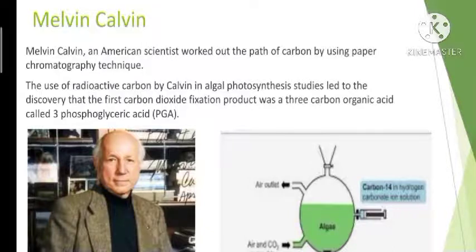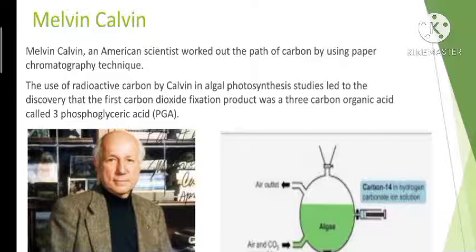Scientists were interested in finding out how the dark reaction proceeded and what was the first product formed when carbon dioxide was fixed. It was Melvin Calvin, an American scientist, who worked out the path of carbon using paper chromatography. For his exemplary work, he was awarded the Nobel Prize in 1961.